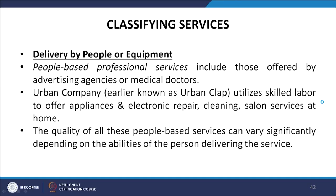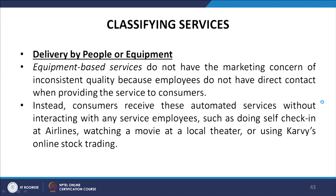When the delivery of a service is by people, professional services include those offered by advertising agencies or medical doctors. Urban Company, earlier known as Urban Clap, utilizes skilled labor to offer appliance and electronic repair, cleaning, and salon services at home. The quality of people-based services can vary significantly depending on the abilities of the person delivering the service. Equipment-based services do not have the marketing concern of inconsistent quality; consumers receive these automated services without interacting with any service employee, such as doing self check-in at airports, watching a movie at a local theatre, or using an online stock trading platform.